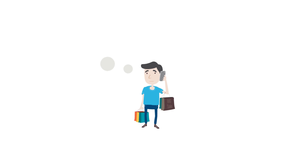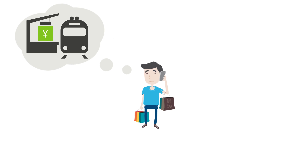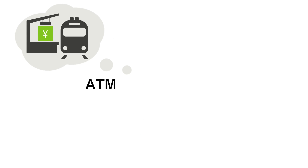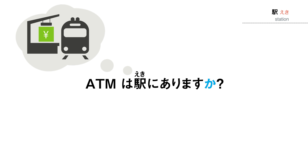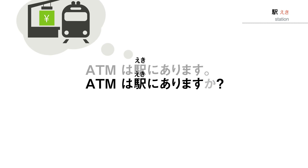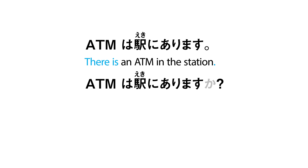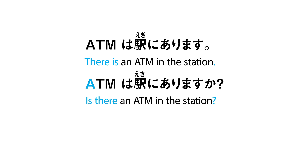Imagine you are looking for an ATM and you want to ask someone if there's one in the station. You just add か to the end to make a question. Without か, you have: ATMは駅にあります — there is an ATM in the station. If you add か at the end, you're now asking: ATMは駅にありますか — is there an ATM in the station?